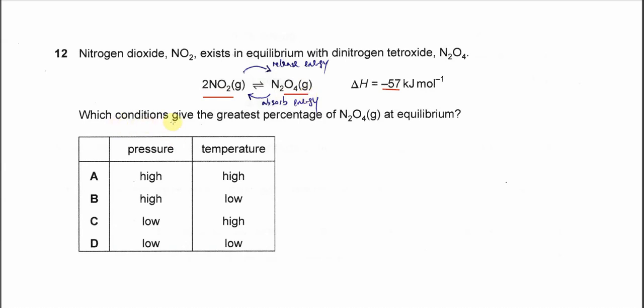Which conditions give the greatest percentage of N2O4, the product, at equilibrium? This means what changes can we make to ensure N2O4 gets a greater percentage.